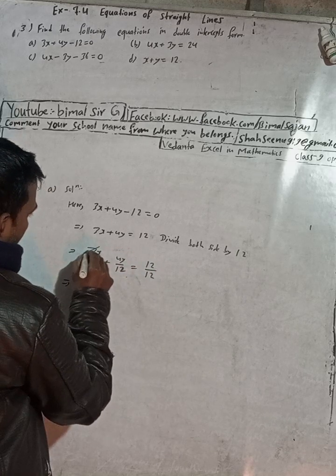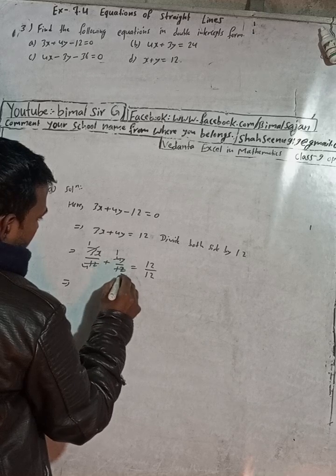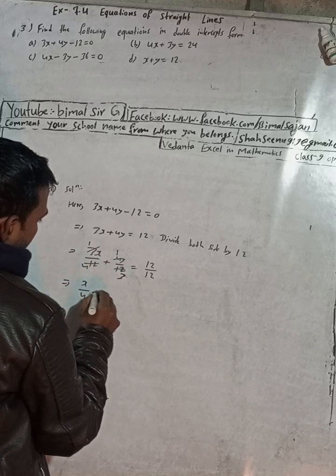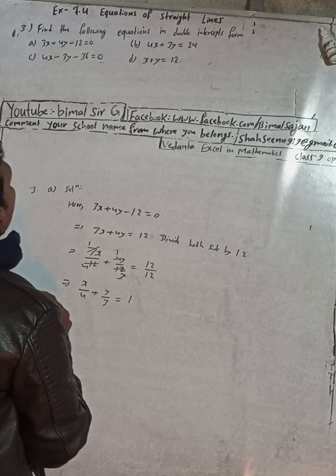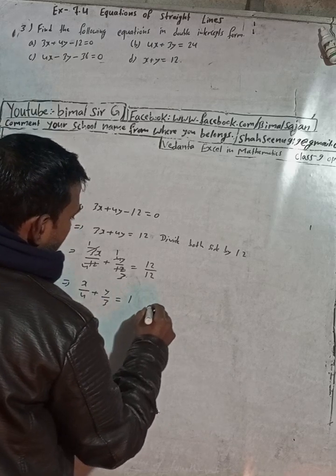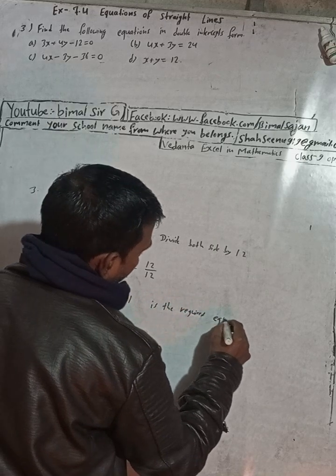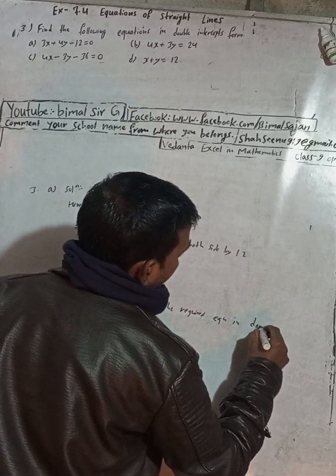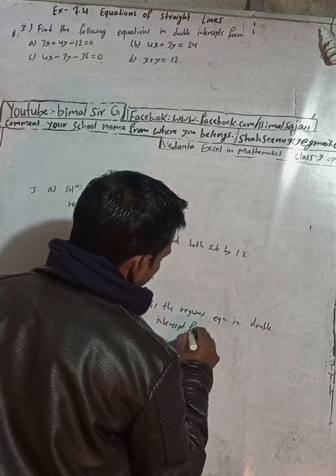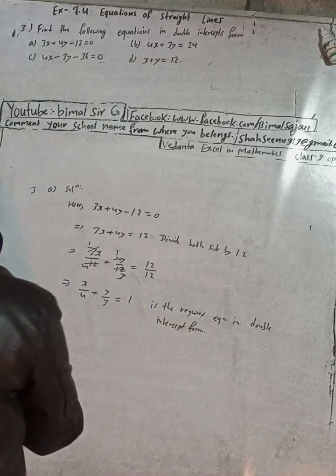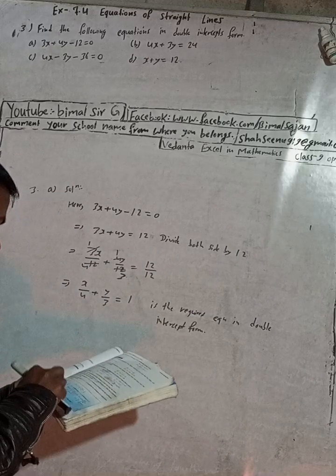Dividing both sides by 12 gives 3x/12 plus 4y/12 equals 12/12. Simplifying: 3 and 12 gives 4, and 4 and 12 gives 3. So we get x/4 plus y/3 equals 1. This is the required equation in double intercept form.